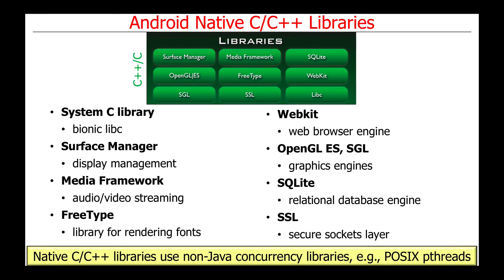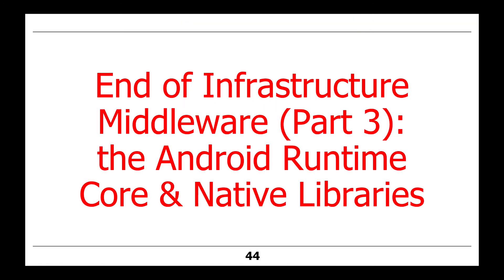Native C and C++ libraries use many non-Java concurrency libraries, such as POSIX pthreads, under the hood to do their work. You rarely, if ever, access that directly in your typical Java or Kotlin apps. That's the end of the infrastructure middleware discussion focusing on the Android runtime core libraries and native libraries. The apps and application frameworks leverage all these lower-level infrastructure middleware capabilities in order to simplify what they need to do in order to provide their services to applications and end users.